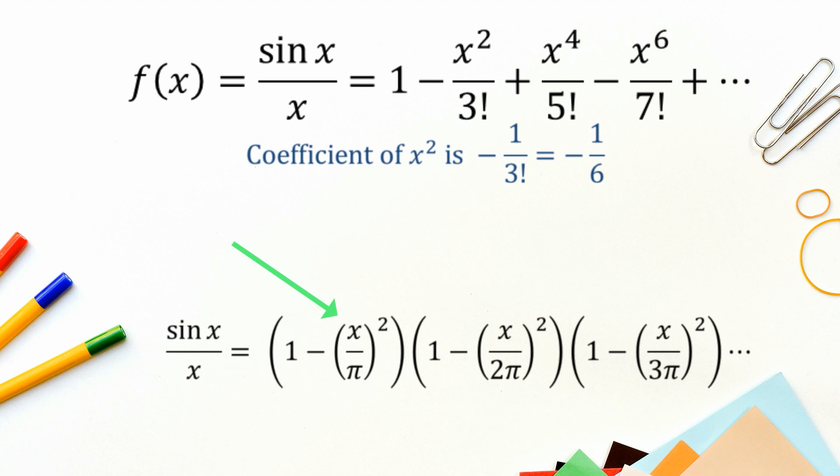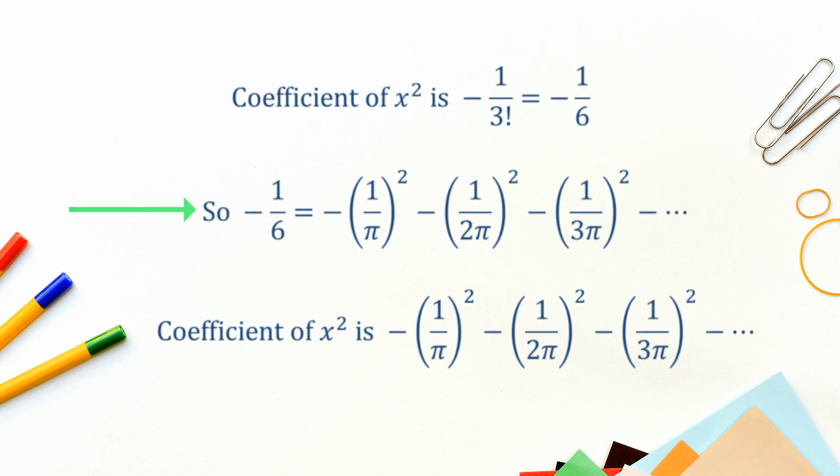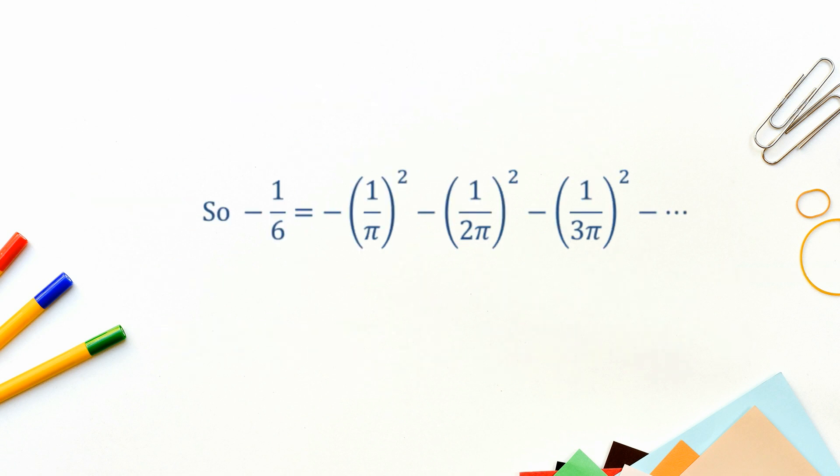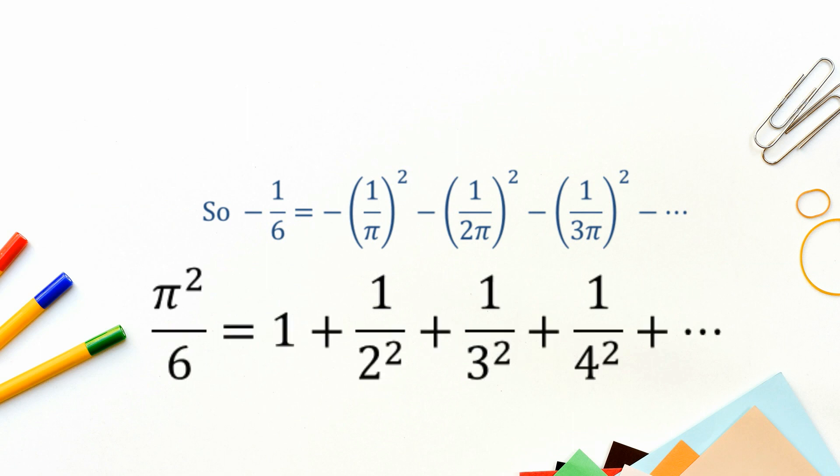We could also go 1 and then negative 1 on 2 pi all squared, and then 1, 1, 1, 1, 1. And we could do the same with negative 1 on 3 pi all squared. So we would end up with the coefficient of x being this. So now all we have to do is multiply by negative 1 to get rid of all the negatives. Multiply both sides by pi². And we have pi² on 6. And if you look at what we've got on the right hand side, it's exactly the infinite series that we've been using throughout the video.